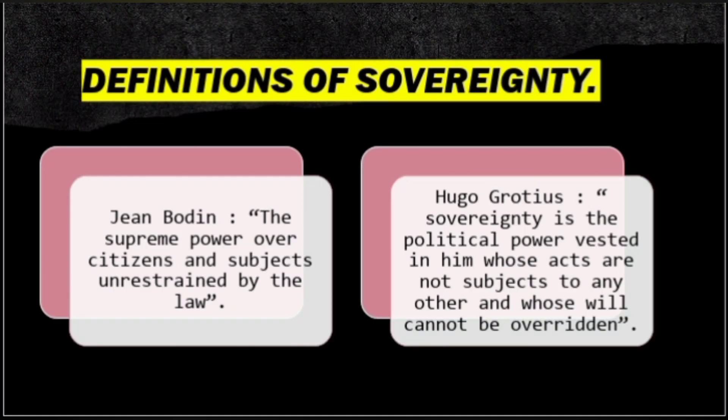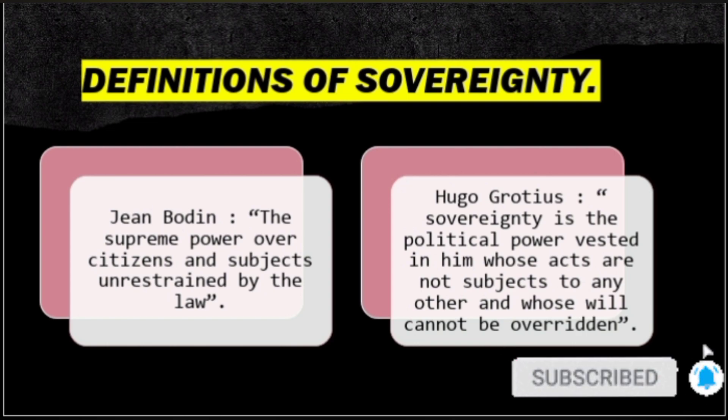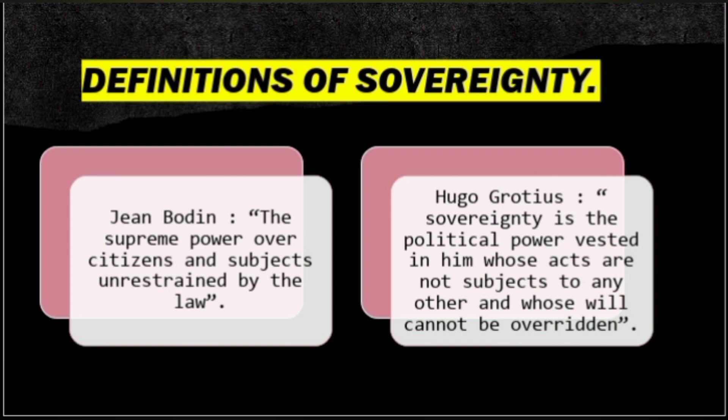Regarding definitions, Jean Bodin says sovereignty is 'the supreme power over its citizens and subjects unrestrained by law.' Hugo Grotius says sovereignty is a political power vested in him whose acts are not subject to any other and whose will cannot be overridden. They are essentially talking about the supremacy and absolutism of one emperor or king who is not accountable and whose power cannot be challenged — this is the absolute power of the monarch.